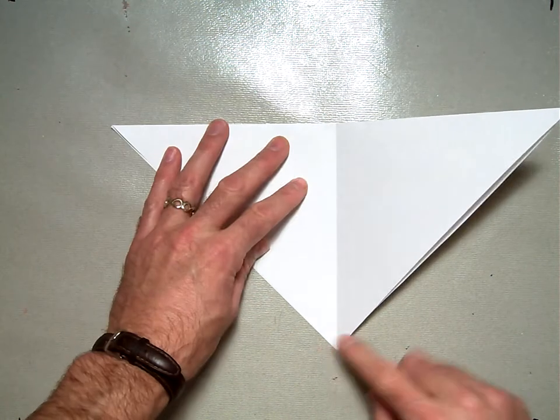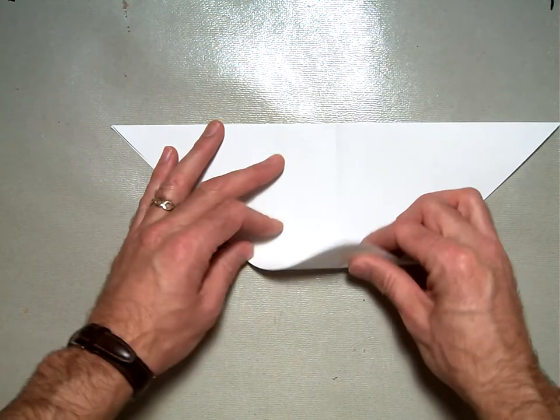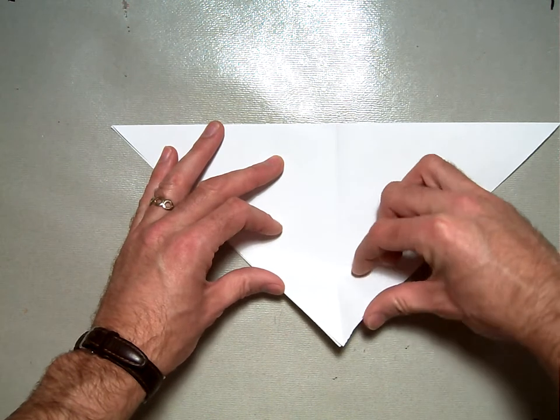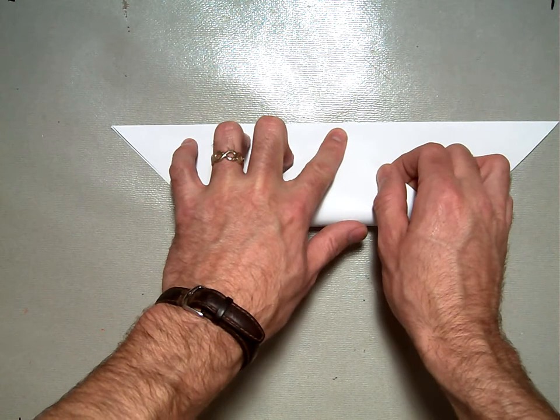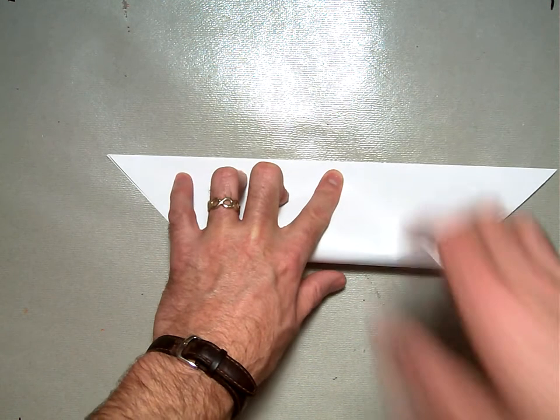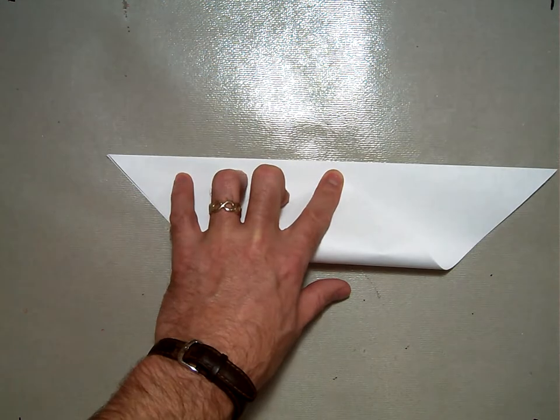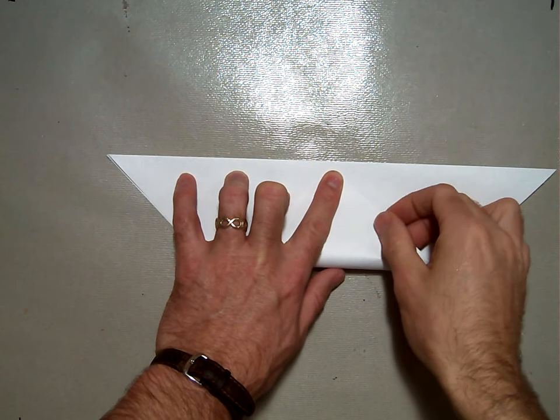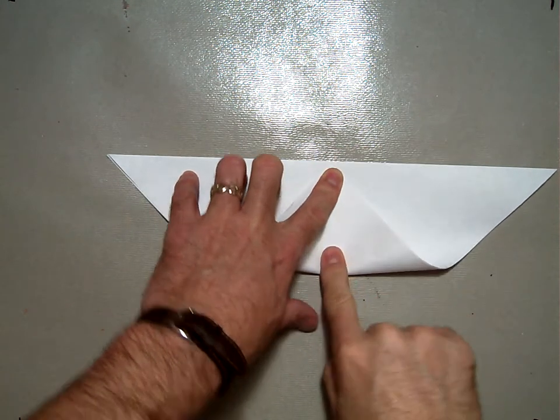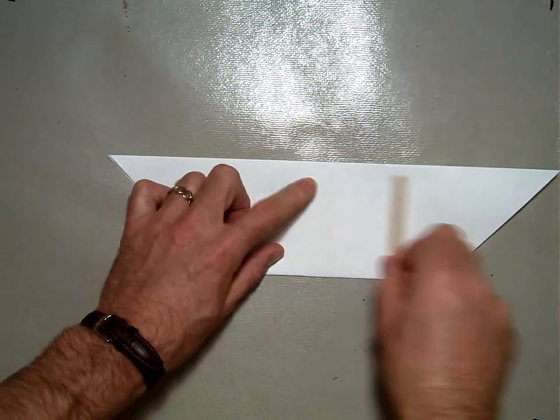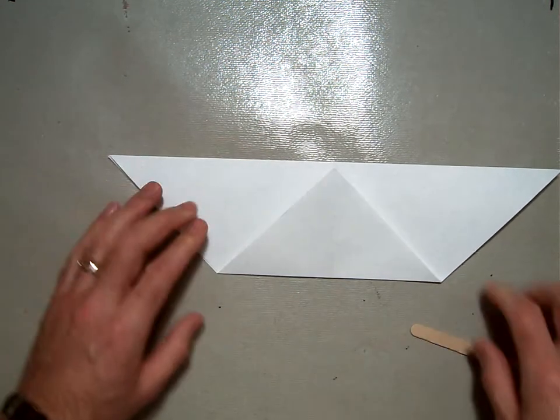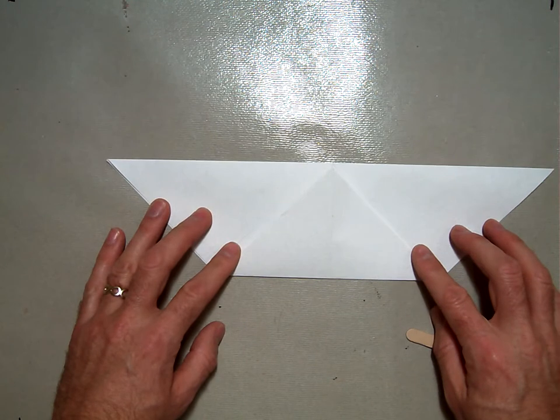Then it says to take this corner here and fold both pieces. There's two pieces, one on top and one below. Fold both pieces up so that the corner meets that edge right there. Because you want to have that corner meeting the edge of your paper. Then fold that like so. And you'll have that corner pointing right up to the edge.